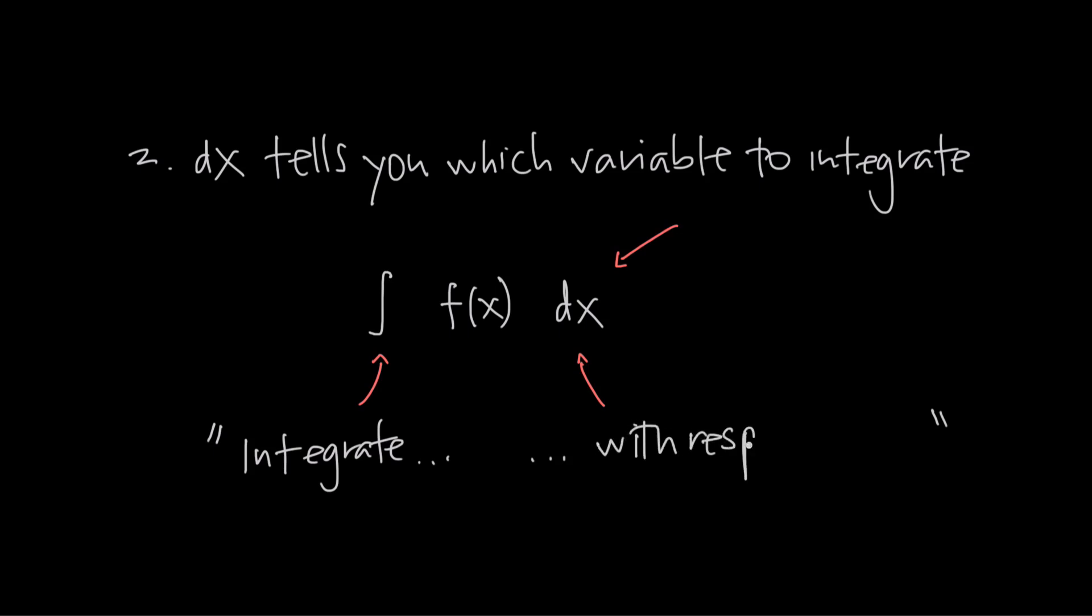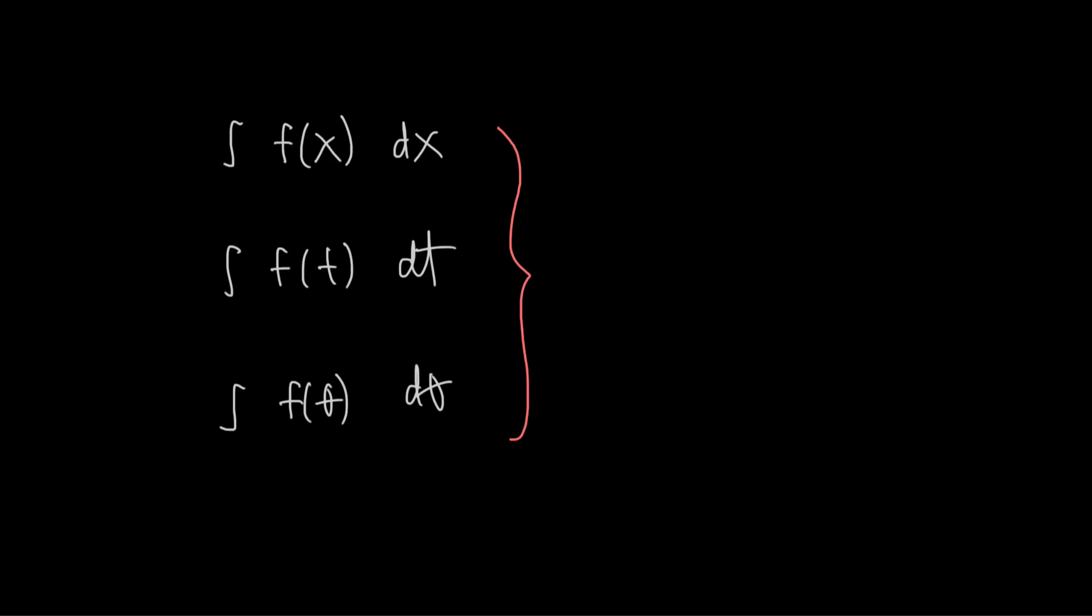Now you might ask, why do I need the dx to tell me which variable to integrate when the function only has an x in it in the first place? Great question. And you're right. In single variable calculus, the dx or dt or d whatever feels a little irrelevant. Because if there's only one variable in the integrand, then you already know which variable to integrate. It's pretty obvious that you would integrate f of x with respect to x, f of t with respect to t, or f of theta with respect to theta.